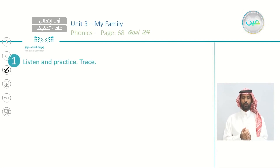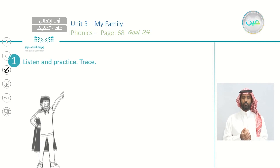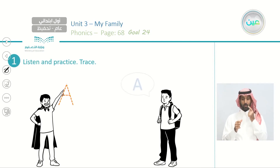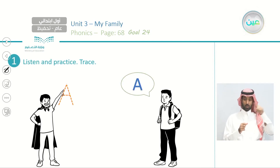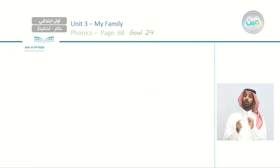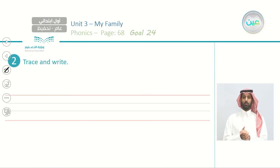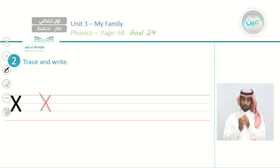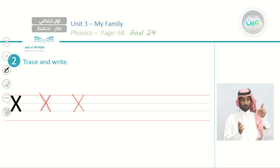Now page 68, listen and practice and trace. Again we have two boys: the first one writes A in the air, and the other boy says A. Number two — trace and write. What is this letter? X. Let's trace: one, two, crossing lines. This is X. Again, two lines. This is X.